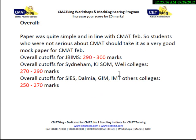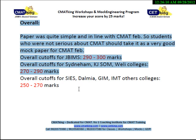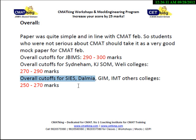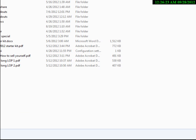Overall analysis: if you are targeting JBIMS, the cutoff should be 290 to 300 marks. For K.J. Somaiya and Level B colleges, the cutoff is 270 to 290. For Level C colleges like SIS, Dalmia, GMT, IMT Nagpur and Hyderabad, the cutoff is 250 to 270. This was the overall breakup of the CMAT paper — all the best, do well.